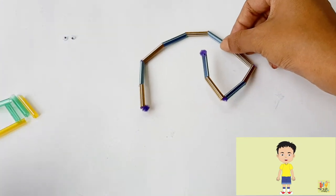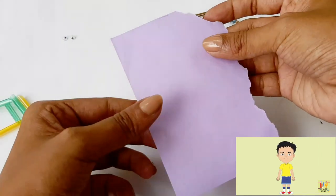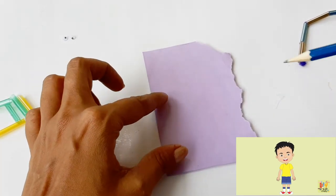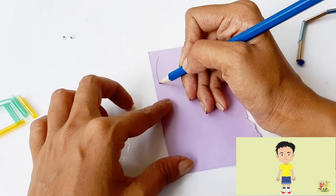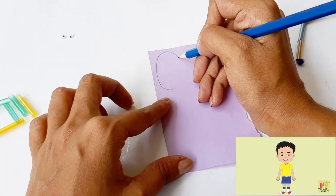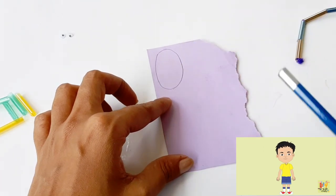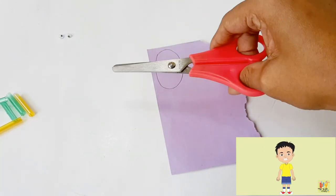Okay, next we need a piece of colored paper to draw the head of our snake. It's up to you what kind of shape you want. It can be a circle, oval, or square.